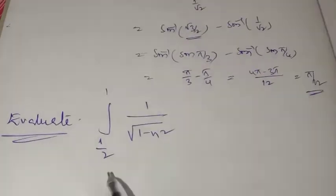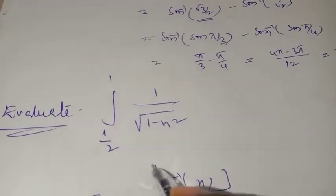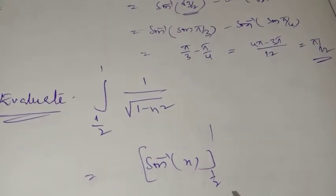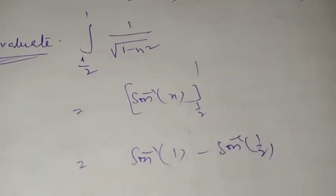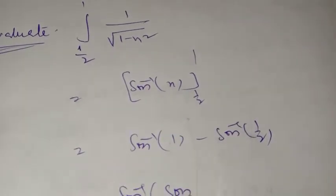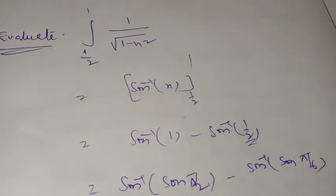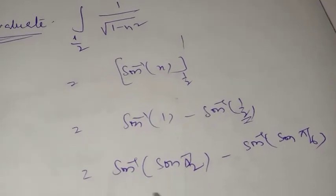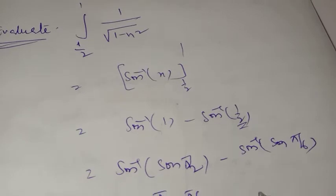Next: same integrand with limits 1/2 to 1. sin inverse x from 1/2 to 1. Substituting: sin inverse of 1 is π/2, minus sin inverse of 1/2, which is π/6 (sin 30°). So the answer is π/2 minus π/6 equal to π/3.